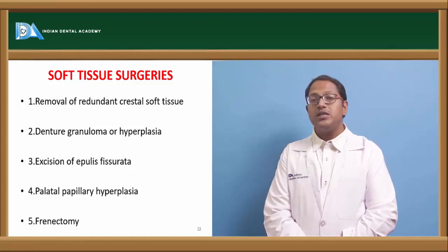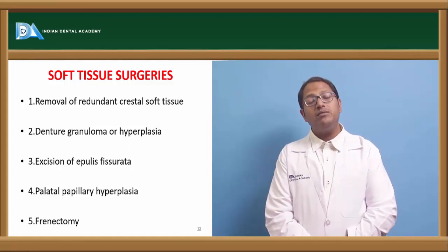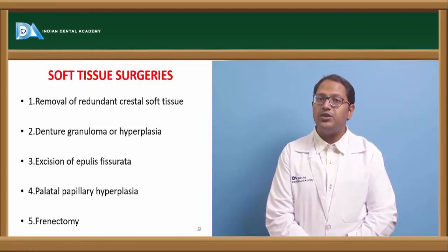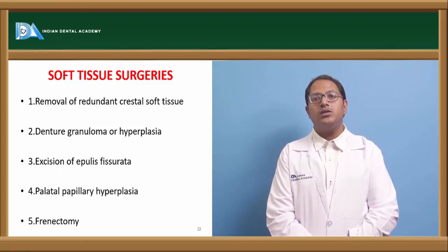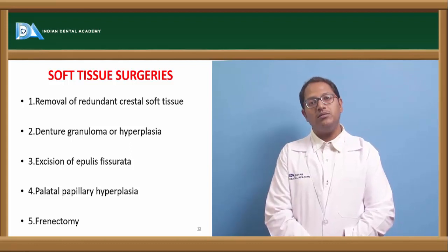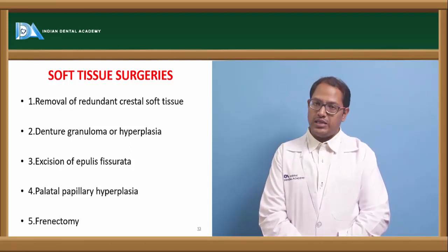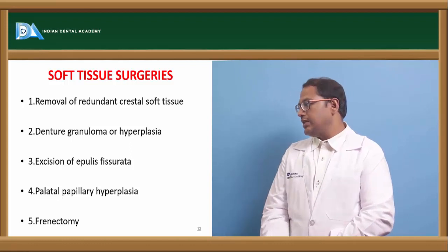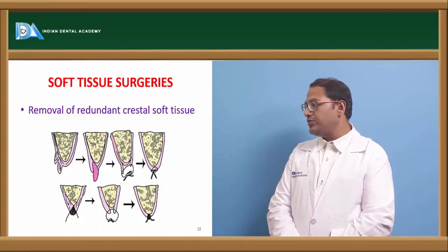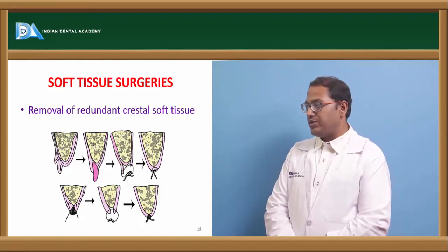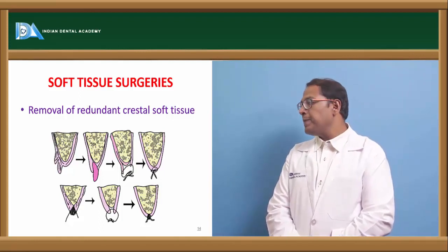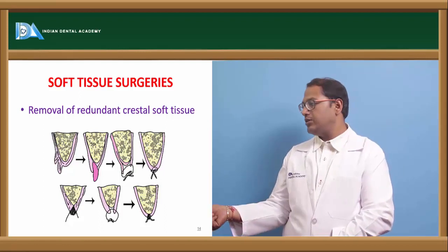If there is an epulis fissuratum, or if the frenum level is high, we need to address it. However, we cannot relieve the frenum all the way to the crest of the ridge because we would lose our seal there. Instead, we reposition the frenum — down in the case of the mandible and up in the case of the maxillary arch. The redundant crestal soft tissues are removed by raising a flap, excising the soft tissue with a scalpel (blade number 11 or 13), and suturing it back onto the bone.